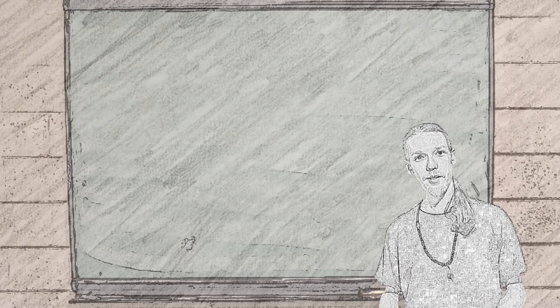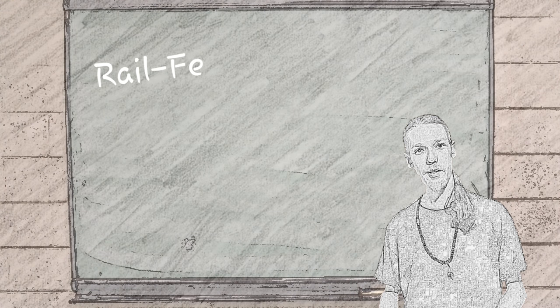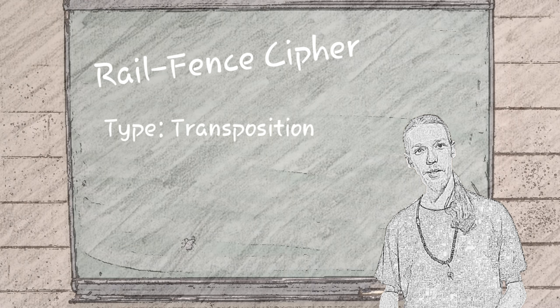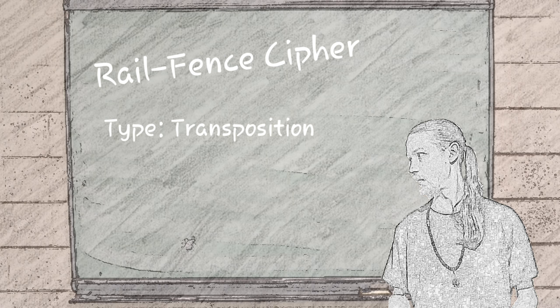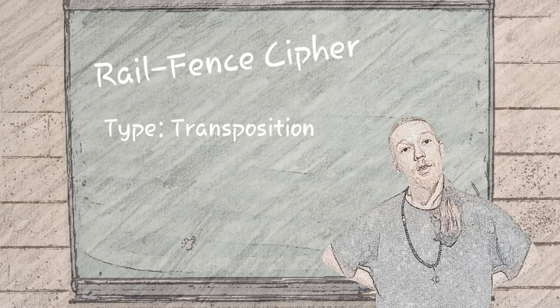Hey there, it's Kit, and today's topic is the rail fence cipher. A rail fence cipher is a form of transposition cipher. To use the rail fence, you and your co-conspirator must agree on a key beforehand.